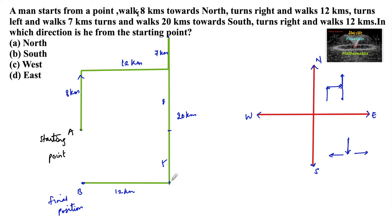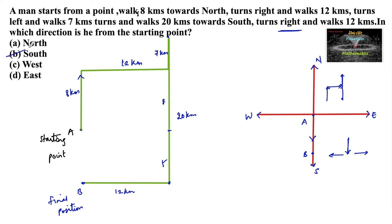We should not get confused here. When he is coming down, his right side means we have to think of the left side from our perspective. So in which direction is he now? From the starting point A, he is in the south direction. We can say B is in the south direction from A. So option B is the answer.